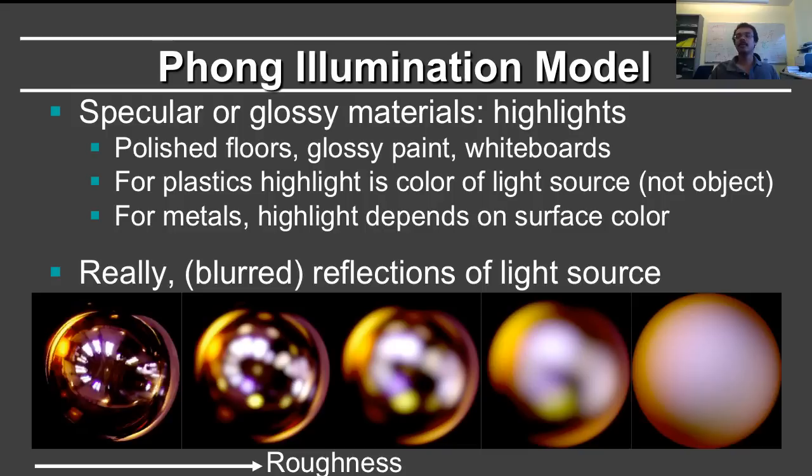Examples of specular or glossy materials are polished floors, glossy paint, whiteboards. Furthermore, highlights behave somewhat differently from plastics or dielectric materials as opposed to metals. In plastics, the highlight is the color of the light source, not the body color of the object. This is a very common thing. You could have a green ball and you look at the highlight, it's still white because the light source is white. Metals on the other hand, the highlight depends on the surface color and is modulated by the surface color. We don't have time to go into the physics of all of these effects. Hopefully that's something you can look up or we can cover in a future course. But these are basic properties of illumination and highlights.